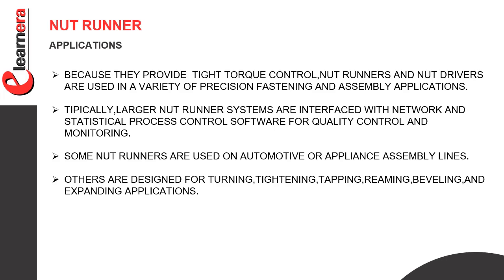Typically, larger nut runner systems are interfaced with network and statistical process control software for quality control and monitoring. Some nut runners are used on automotive or appliance assembly lines. Others are designed for turning, tightening, tapping, reaming, beveling, and expanding applications.